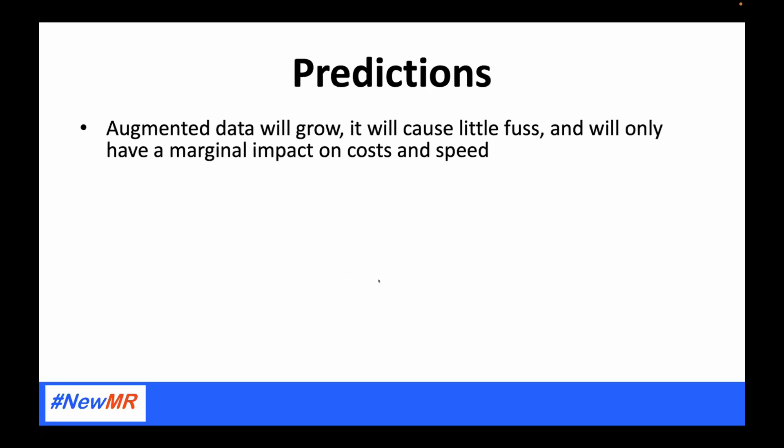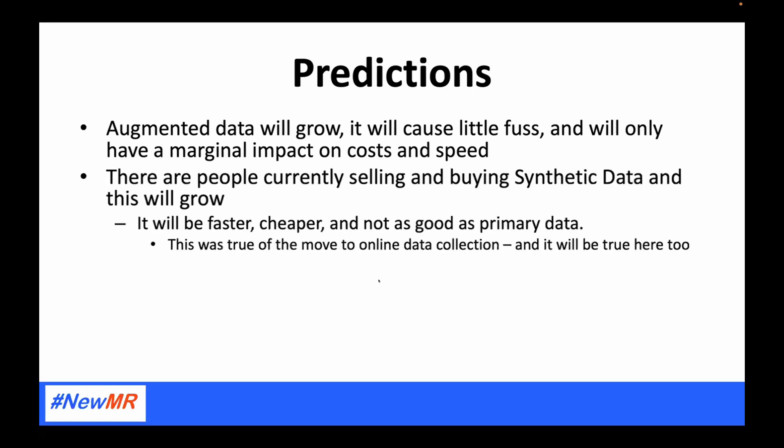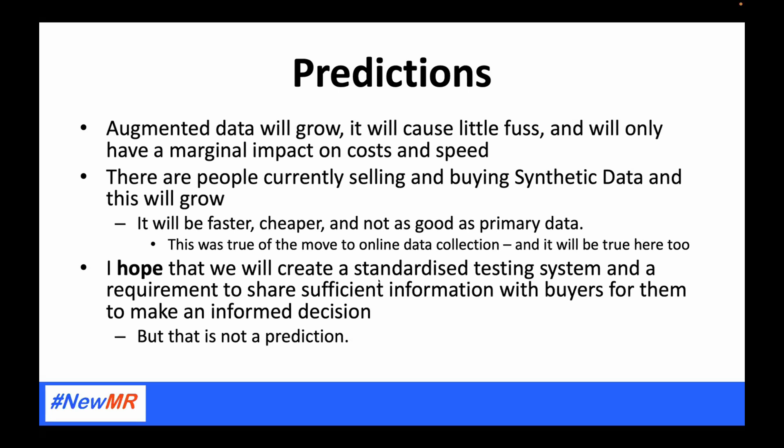My predictions: augmented data is going to grow, will cause very little fuss, and will only have a marginal impact on cost and speed — with augmented data you're still collecting surveys, trying to make things a little bit better. There are people currently selling and buying synthetic data, and this is going to grow. Synthetic data will be faster and cheaper, but I do not believe it will be as good as primary data — just as when we moved from CATI and face-to-face to online, it was faster and cheaper but not as good. And this isn't a prediction but a hope: I hope we will create a standardized testing system and a requirement to share sufficient information with buyers for them to make an informed decision.